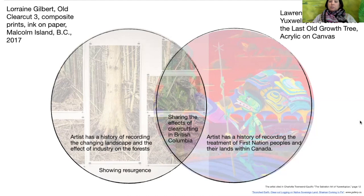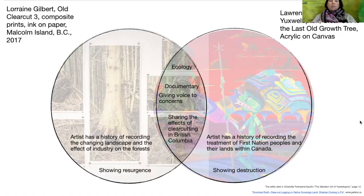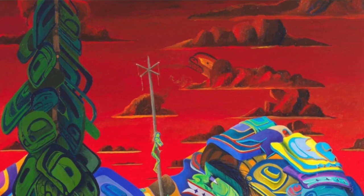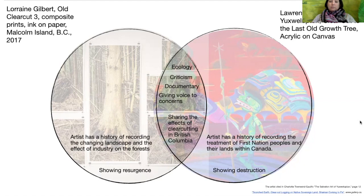In Gilbert's piece, she shows a resurgence of the forest, whereas Yuxweluptun is focusing on the destruction — his forest is left with only one tree and nothing else. They're both giving voice to their concerns, and they're both focused very much on ecology, which is important to both of them. They both document what's going on: Gilbert documents in a very clear way using photography, while Yuxweluptun does so through painting — it's still a document, although more expressive. And they're both critical of the forestry industry as well.